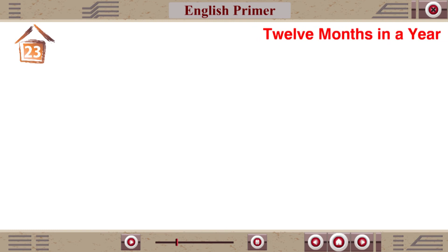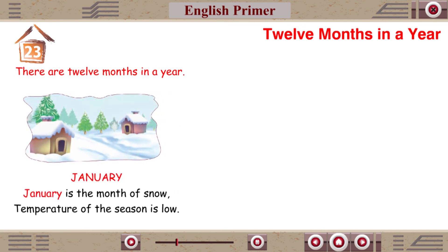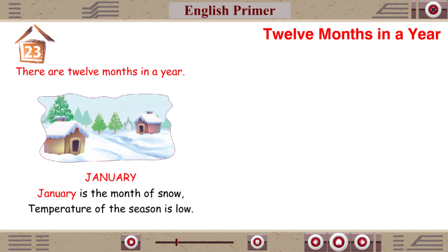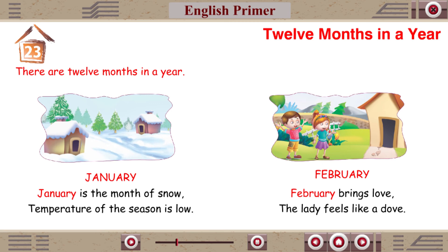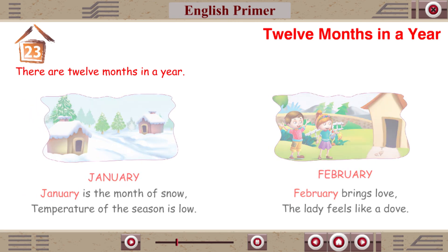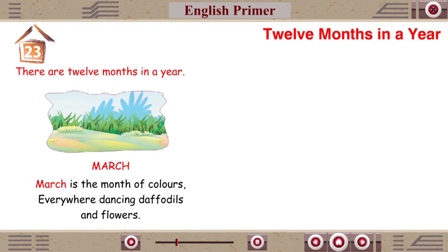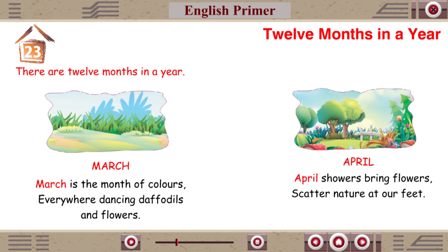Chapter 23: Twelve Months in a Year. There are 12 months in a year. January is the month of snow; the temperature of the season is low. February brings love; the lady feels like a dove. March is the month of colors; everywhere dancing daffodils and flowers. April showers bring sweet flowers, scattered by nature at our feet.